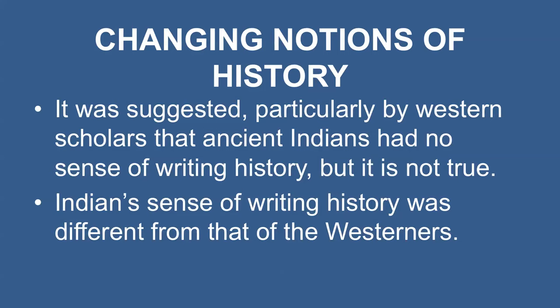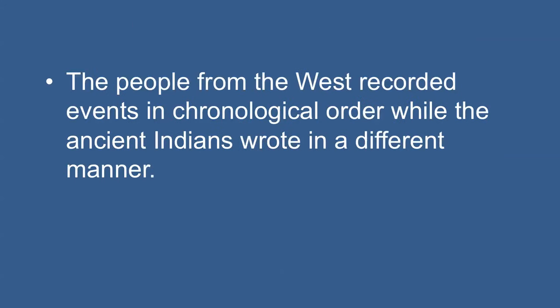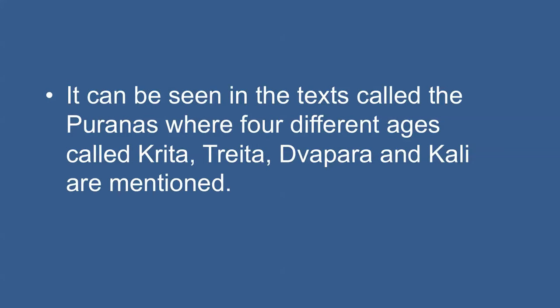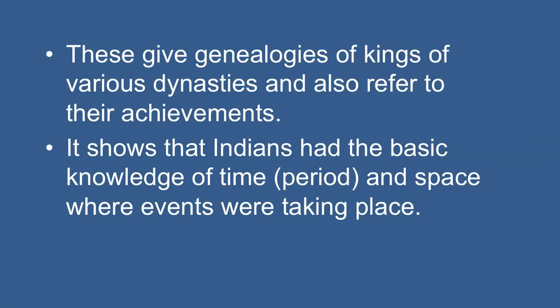It was suggested particularly by western scholars that ancient Indians had no sense of writing history, but this is not true. Indians' sense of writing history was different from that of the westerners. People from the west recorded events in chronological order, while ancient Indians wrote in a different manner. This can be seen in texts called the Puranas, where four different ages — Krita, Treta, Dvapara, and Kali — are mentioned, and in each age we get a detailed list of rulers and dynasties. Besides, a large number of inscriptions have been discovered which give genealogies of kings of various dynasties and refer to their achievements, showing that Indians had basic knowledge of time and space.